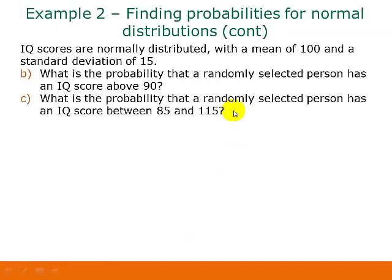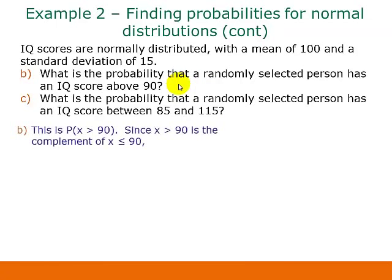So Part B of this problem says, what is the probability that a randomly selected person has an IQ score above 90? Now this time we're going to use the complement to figure this out. Since we just found the probability that x is less than or equal to 90, x greater than 90 is the complement of that. So all we would have to do is subtract our previous answer from 1. Our previous answer was 0.2525, so if we subtract that from 1, we get 0.7475.